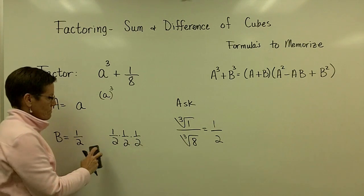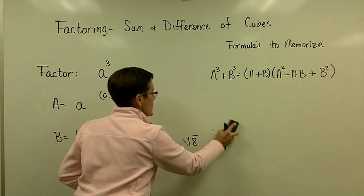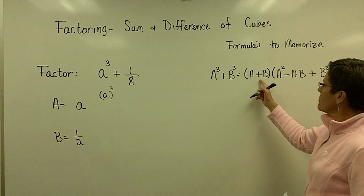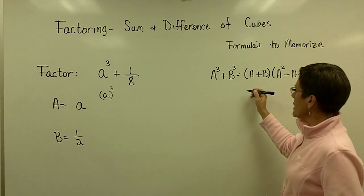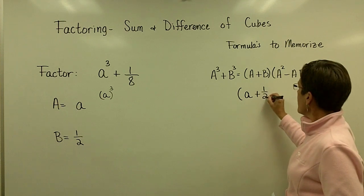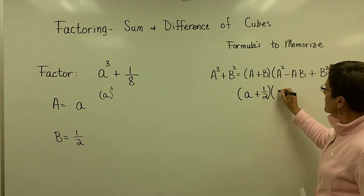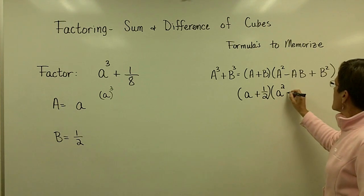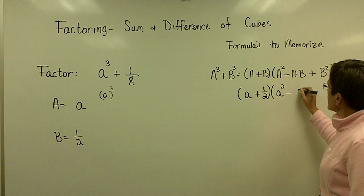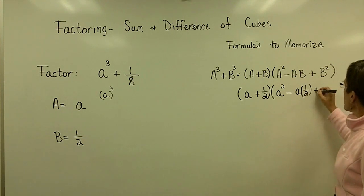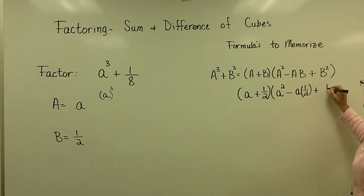I'm going to have to get rid of that to give myself some space. So now let's go and plug these values, little a and 1 half, in for big A and big B. So right here I have little a plus 1 half, and little a has to be squared. I don't need to put it in parentheses because it's just that single factor, minus our big A is a little a and our B value is 1 half, so A times 1 half, and then my B value is 1 half, and I want to square that.